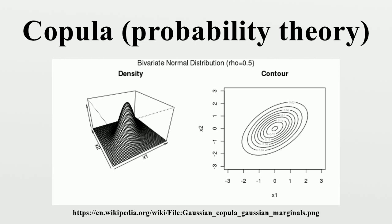Fréchet–Hoeffding Copula Bounds: The Fréchet–Hoeffding theorem states that for any copula C and any point, the following bounds hold. The function W is called the lower Fréchet–Hoeffding bound, and the function M is called the upper Fréchet–Hoeffding bound. The upper bound is sharp — M is always a copula, and it corresponds to co-monotone random variables.